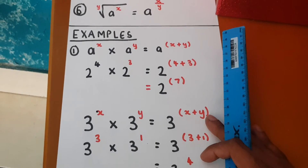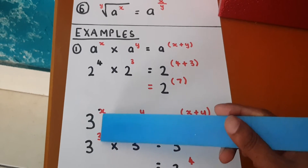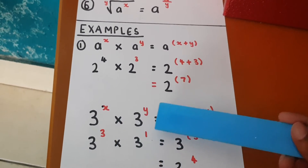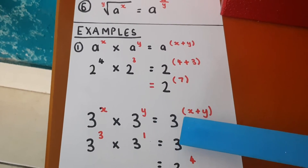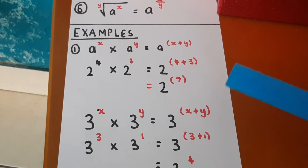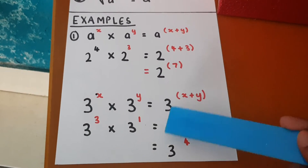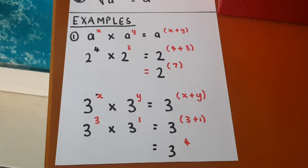Let's do another example. Three to the power x times three to the power y equals three to the power x plus y. Putting in numbers: three to the power three times three to the power one equals three to the power three plus one, and the final answer is three to the power four.